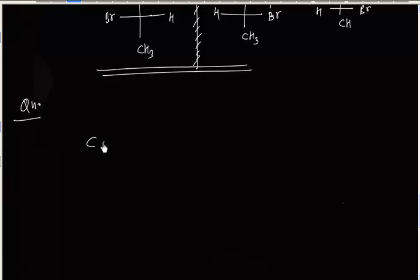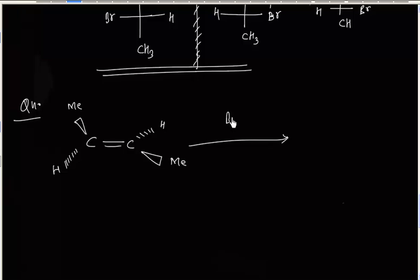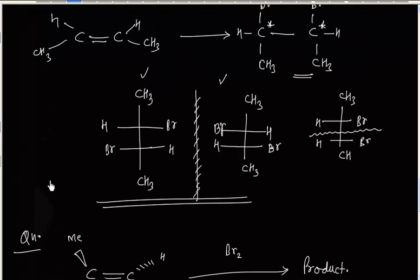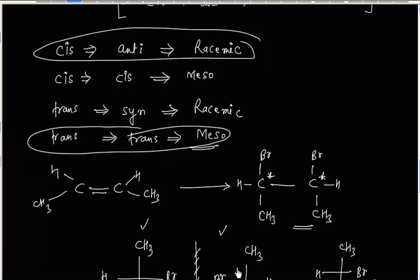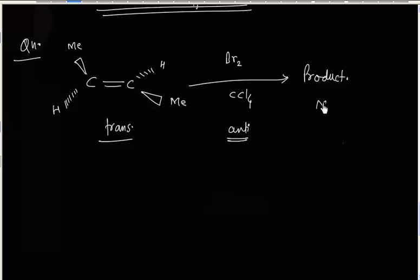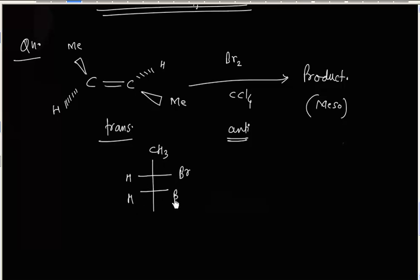Now if we have trans-2-butene and bromine is added in the presence of CCl4, what will be the product? The alkene is trans and addition is also trans, that is anti. Trans alkene with anti addition gives a meso product. We can show this by Fischer projection formula — the meso compound will have a plane of symmetry.